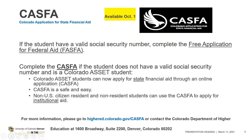Something new this year is the CASFA application — the Colorado Application for State Financial Aid. It's available for students or parents who cannot provide the information required on the FAFSA. To complete the FAFSA, the student must have a valid social security number. If they don't, they would want to complete the CASFA. It is available for ASSET students, DACA, undocumented, international students, and non-residents of the United States, to help them get state funding as well as funding through the college.